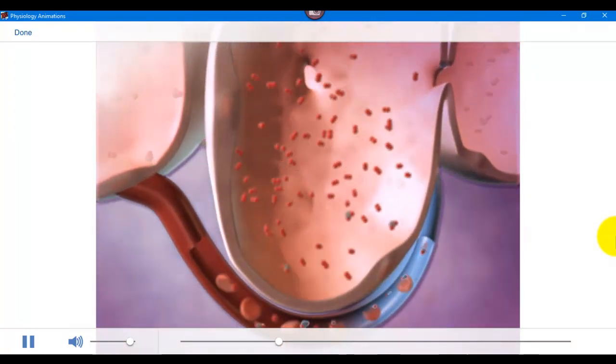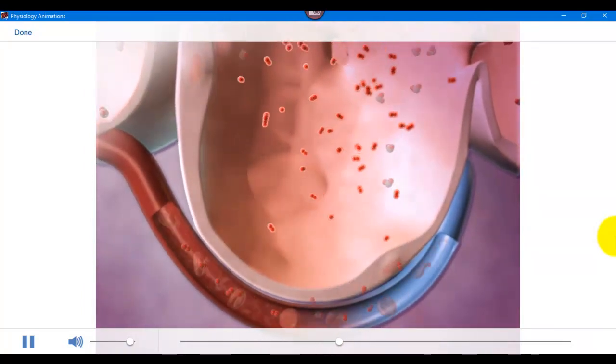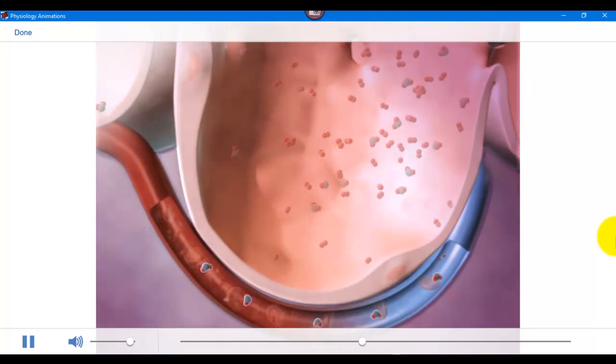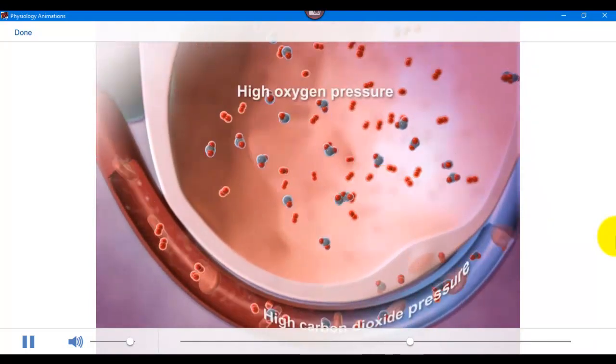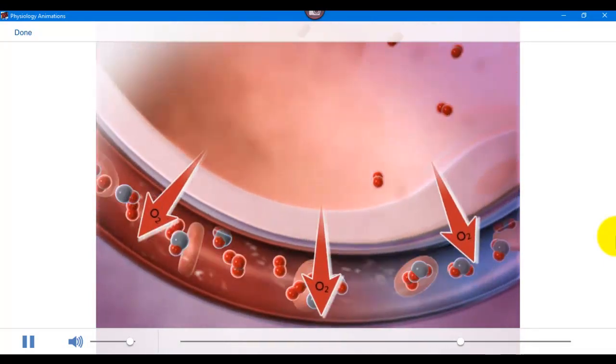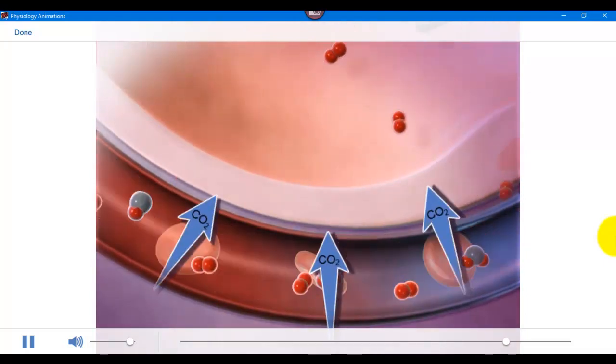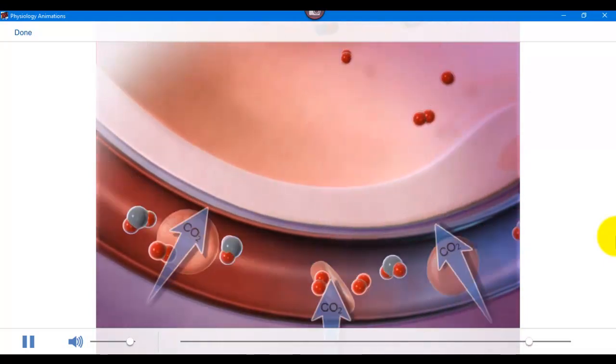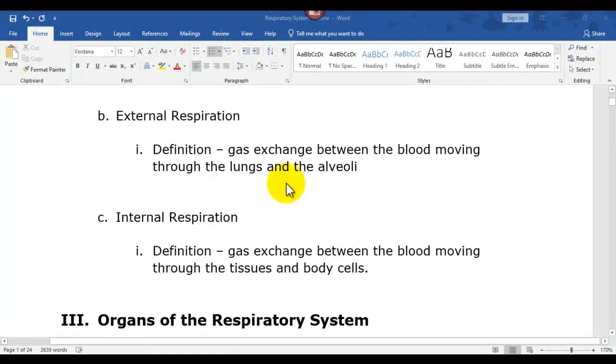This process of external respiration takes place in hundreds of millions of microscopic sacs called alveoli. Oxygen from inhaled air diffuses from the alveoli into the pulmonary capillaries surrounding them and is pumped through the bloodstream. Carbon dioxide from oxygen-depleted blood diffuses from the capillaries into the alveoli and is expelled through exhalation.